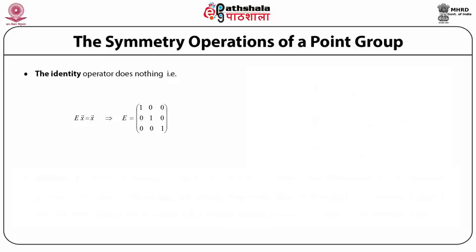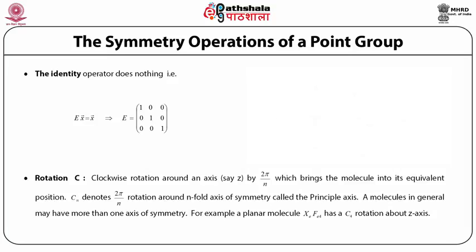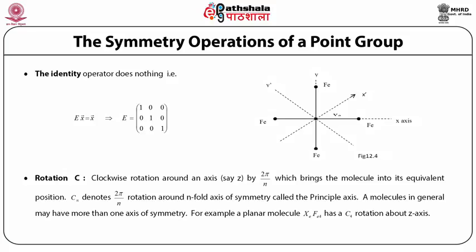The second symmetry operation is rotation C, defined as clockwise rotation around an axis — let us say the z-axis — by an amount equal to 2π/n. This rotation brings the molecule back into its equivalent position. C denotes 2π/n rotations around an n-fold axis of symmetry, called the principal axis. A molecule may have more than one axis of symmetry. For example, the planar molecule XCF₄ has a C4 rotation about the z-axis, and rotating it by angles π/4, 2π/4, 3π/4 brings the molecule back to its original position. It also has other axes, such as the x-axis and y-axis, where rotation by angle π gives the same configuration.